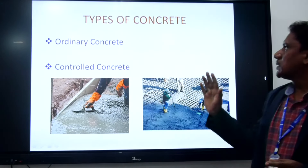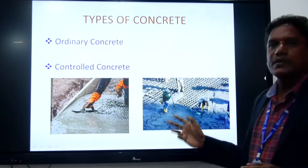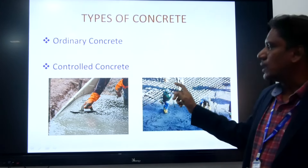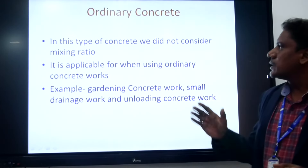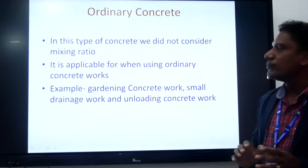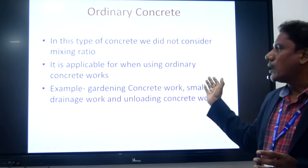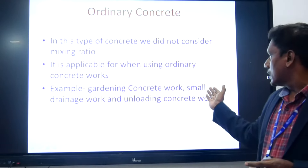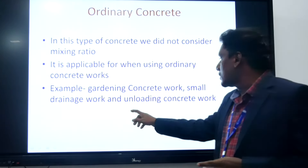There are general types of concrete. There are two general types: the first one is ordinary concrete and the other one is controlled concrete. In ordinary concrete, we do not consider the mixing ratio, and it is applicable for ordinary concrete works such as gardening work, small drainage work, and lean concrete work.